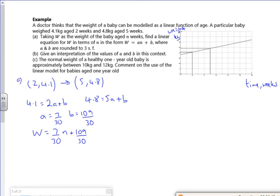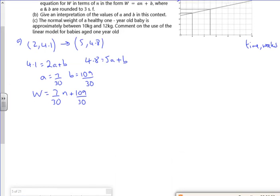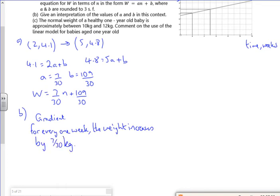B says, give me the interpretation of the values of anything. Right. So part B. So a is going to be the gradient, isn't it? So for the gradient, there. So for every one week, the weight increases by 7 over 30 kg. There.